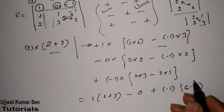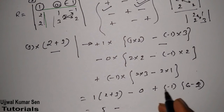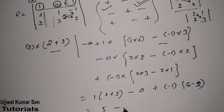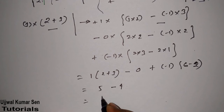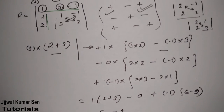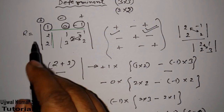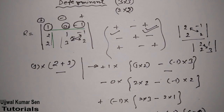Simplifying: 1(2 + 3) minus 0 plus (-1)(6 - 2), which gives 5 minus 4 equals 1. So the determinant value is 1. That is how we find the determinant of this 3x3 matrix.